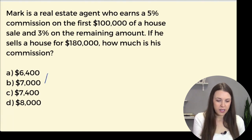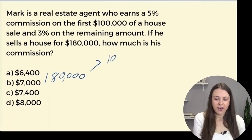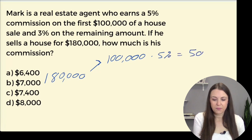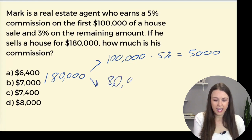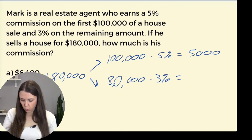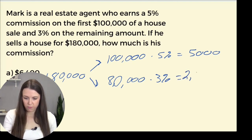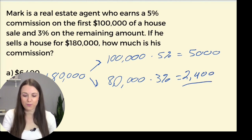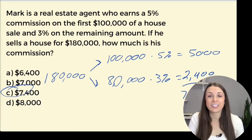So we're going to go $180,000 and break that into two parts. We have the $100,000 — and how much does he make? 5%, which is $5,000. And then there's the additional $80,000 at 3%, which is $2,400. And then we add these together: $5,000 plus $2,400, and we get $7,400. That is how much the real estate agent makes on commission.